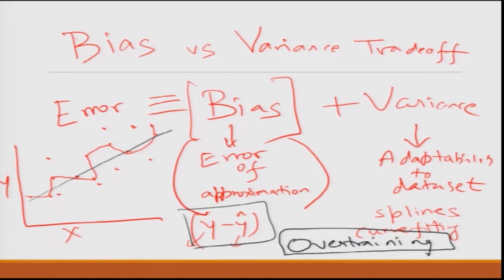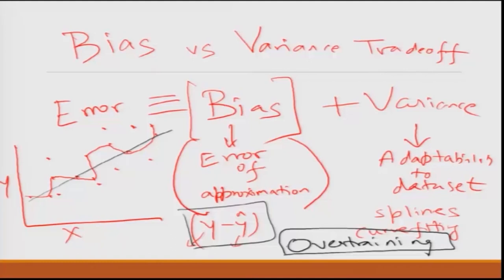If you use a very simplistic model there is always an error of approximation. Regression by definition assumes the world is a straight line, treats anything deviating from that as an error point, and tries to minimize those errors — the least squares error. So even the best regression model will have some error. In case of a more complex, high-degree polynomial model, it may fit very accurately, but when a new data set comes the model fails. You need to strike a balance.